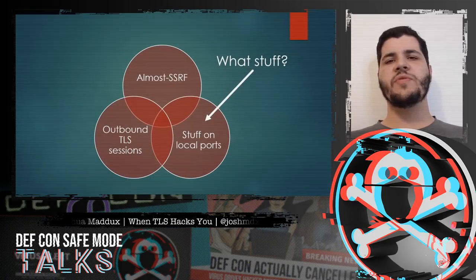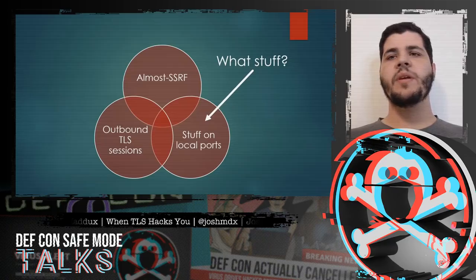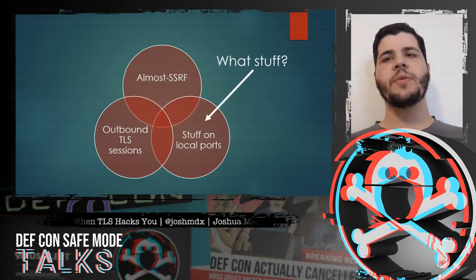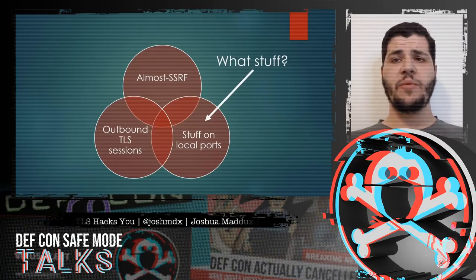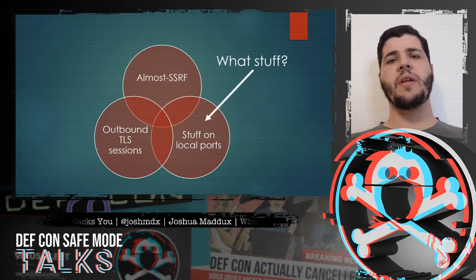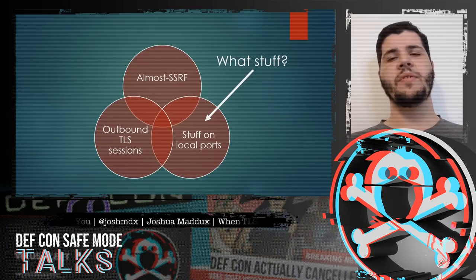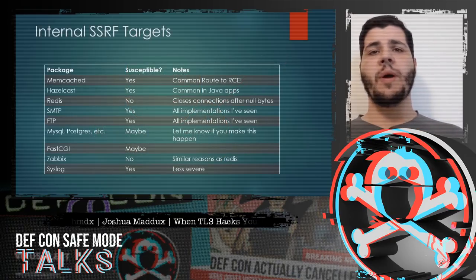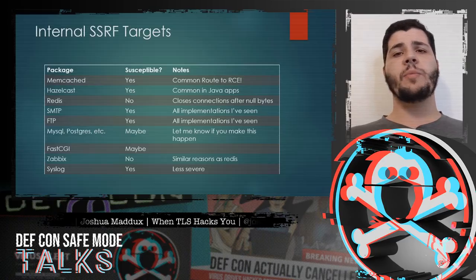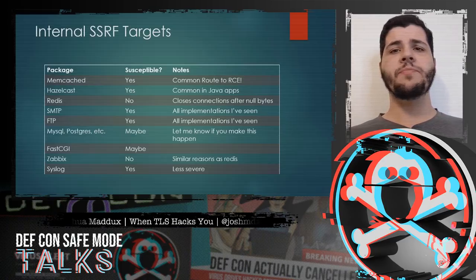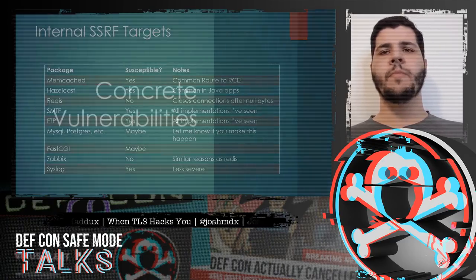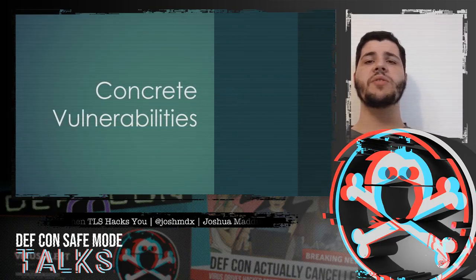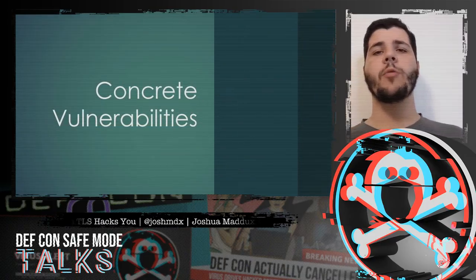The thing you run into the most trouble with is the last circle, because you have to first do some recon to see what ports might be internally exposed on the server. Then you need to see if what's on those ports is permissive enough to keep the connection open past the opening bytes of the TLS client hello. Here are some examples of what you might be looking for there — it's far from complete, but here are the most notable entries. So now we'll go through a couple of exploitable examples of these TLS session-based SSRF vulnerabilities that I reported and got fixed.